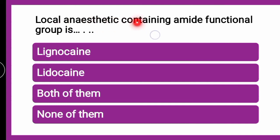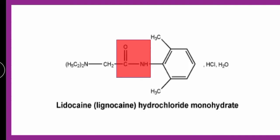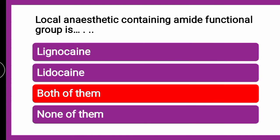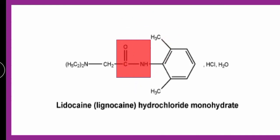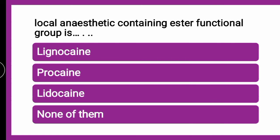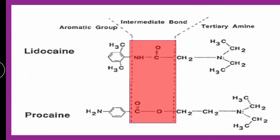The next question is: The local anesthetic containing an amide functional group is which of the following? Whether it is lignocaine, lidocaine, both of them, or none of them? The correct answer is both of them — lignocaine, which is also known as lidocaine, contains an amide functional group, as you can see highlighted in its structure. Procaine is the local anesthetic which contains an ester functional group instead.